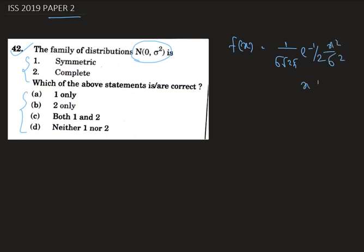Now f(-x) is also 1/(σ√(2π)) e^(-x²/(2σ²)) where x belongs to R. Therefore we can write that f(0+x) equals f(0-x).